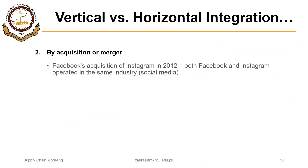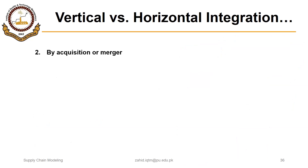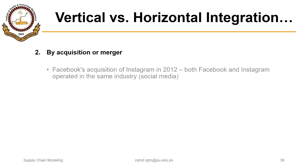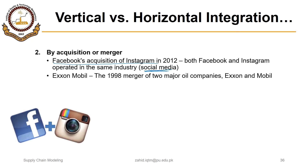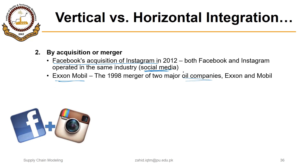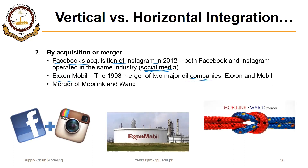The second way to achieve horizontal integration is by acquisition or merger — the company acquires or merges with a company at the same level. One example is Facebook's acquisition of Instagram: both are social media companies at the same level, and now Instagram is part of Facebook, giving Facebook more share in that market. The merger of Exxon and Mobil — two major oil companies — is also an example of horizontal integration. Similarly, the merger of Mobilink and Warid, both telecom companies at the same level, resulted in more market share in the telecom sector.